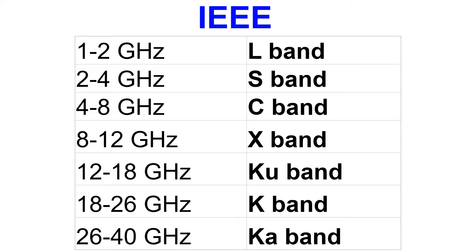In the case of satellite television reception, if LNB is not used, the signals will have to be carried by expensive wave guides. Down converted signals, however, can be carried by inexpensive coaxial cables.